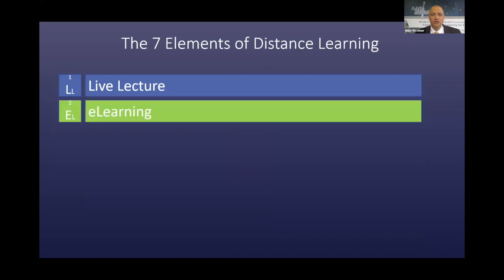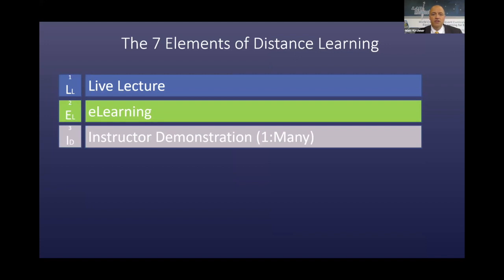Number two, e-learning with a student learning on an e-learning platform, learning the theory that they need to be successful in their program but doing it online. Number three is an instructor demonstration, one to many, with one instructor demonstrating a piece of equipment and a process to a whole group of students. The next item is virtual skill development with an individual learning their skills virtually online before going to the lab.